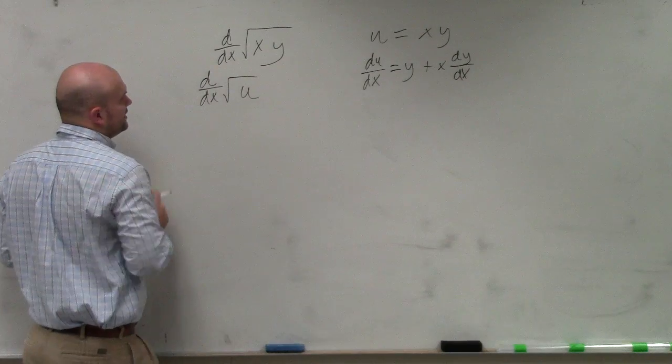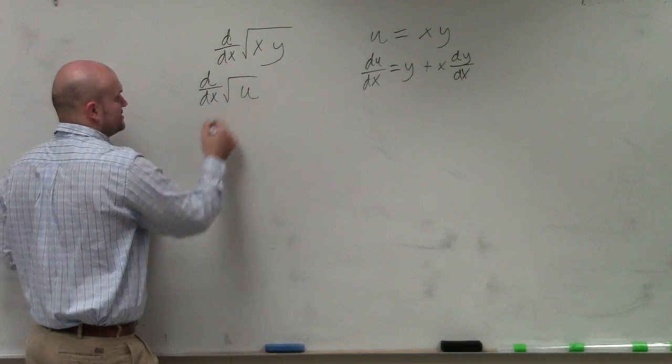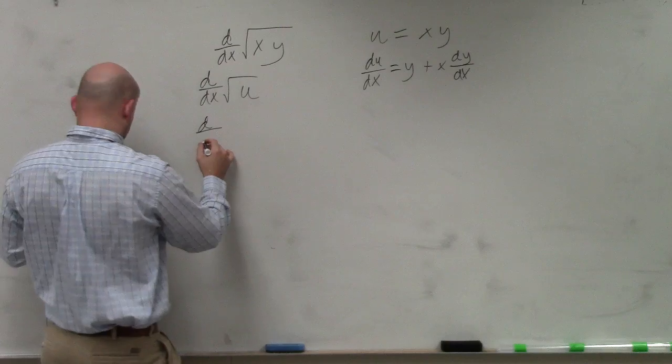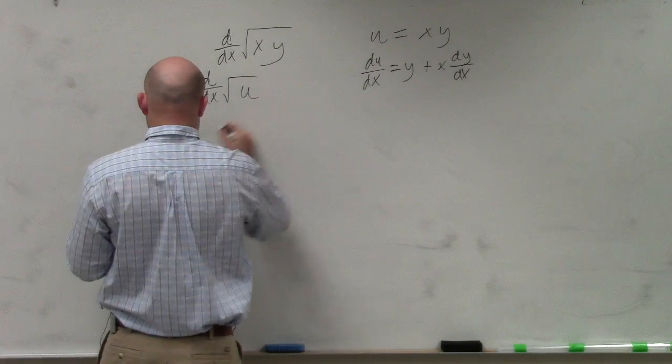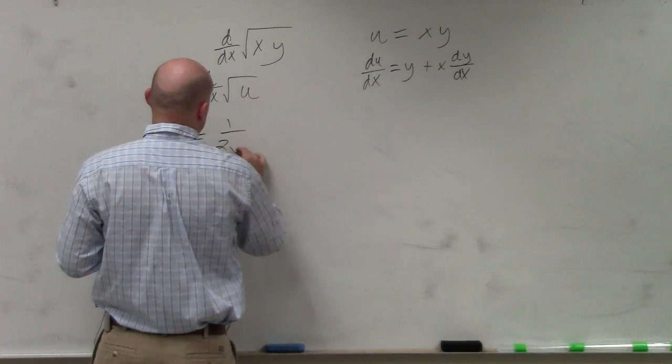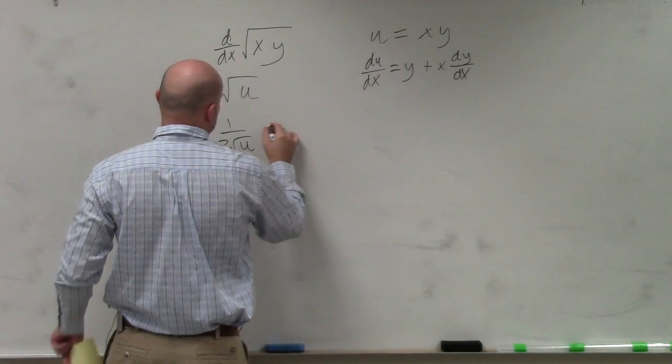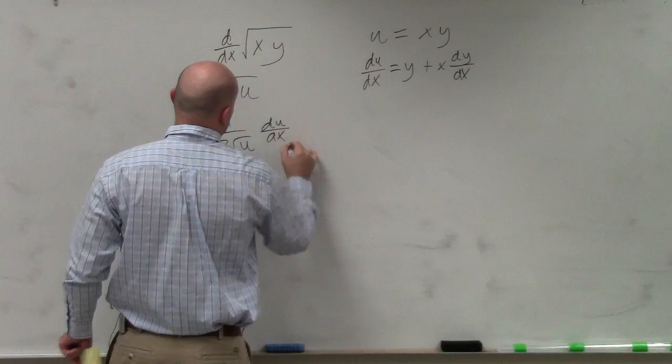And then obviously, we know that the derivative in this is going to be equal to 1 over 2 square root of u times the derivative du over dx.